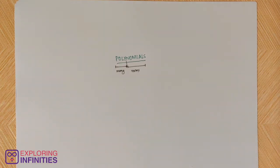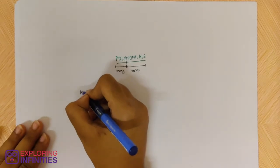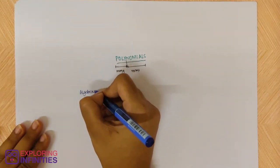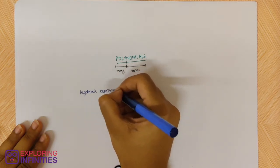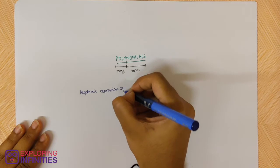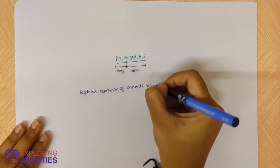How to categorize them and all. In a mathematical way, if you want to write this, you would say that a polynomial is an algebraic expression of constants and variables.